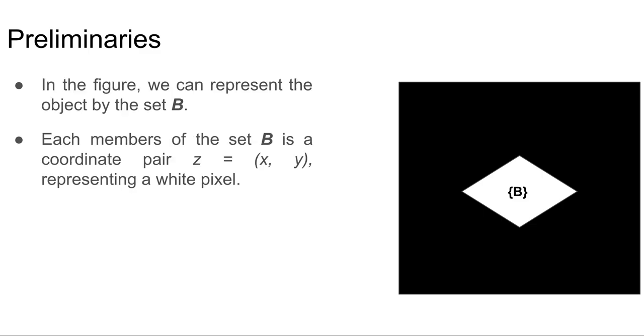In the figure we can represent the object by a set B. Each member of the set B is a coordinate pair z = (x, y) representing a white pixel. So the set B is a set of all coordinate points which has an intensity of white.